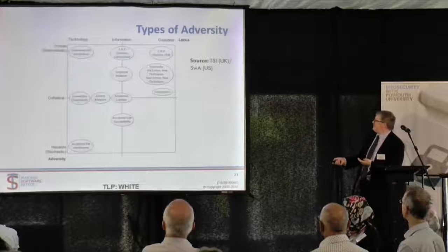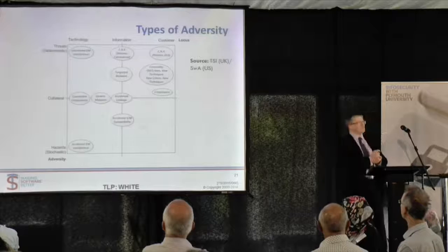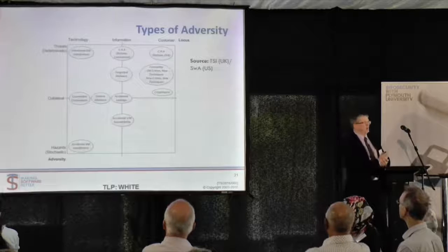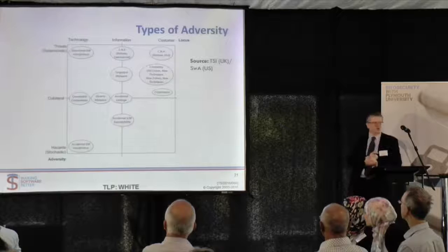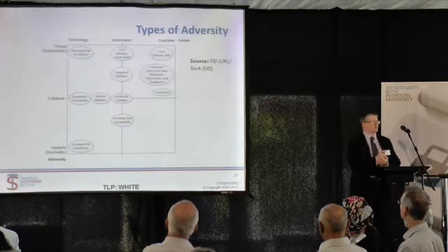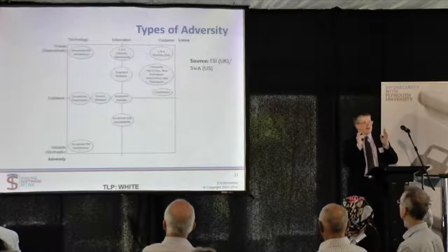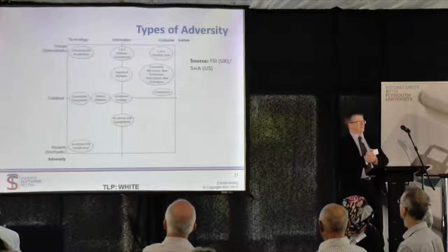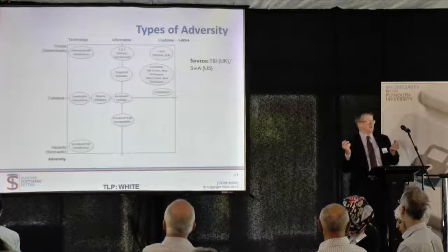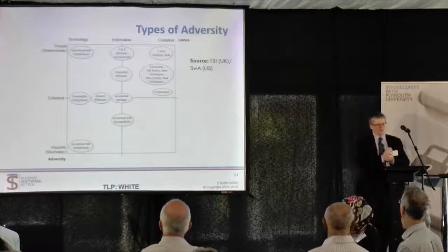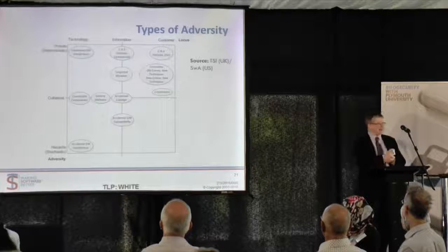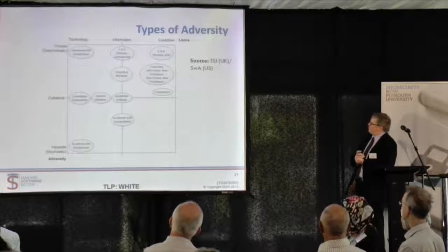Looking at the hazard vs. threat axis: accidental things could be coronal mass ejections — things coming off the sun causing radio frequency interference. At the other end, anyone who's seen Ocean's Eleven knows there's a device that blacks out Las Vegas so they can rob a bank — that's intentional electromagnetic interference. Actually the interference is identical; there is literally no distinction. One is a threat and one's a hazard. The treatments are the same, and the phenomenon is the same.